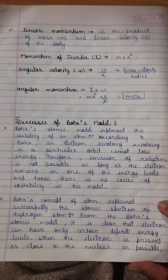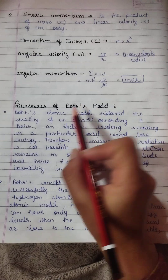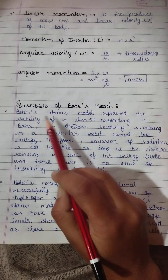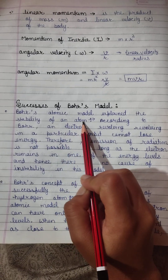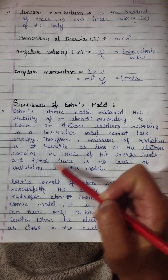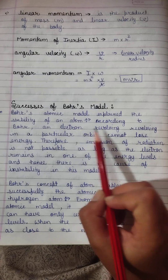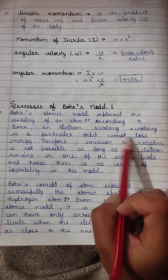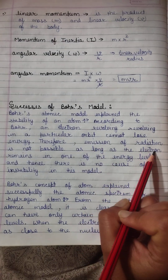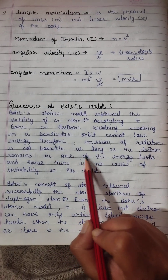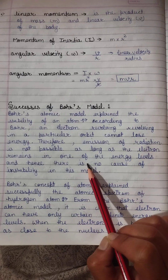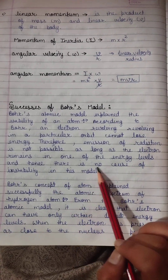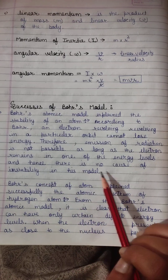Today we will study the successes of Bohr's model. First, Bohr's atomic model explained the stability of an atom — the most important point. According to the model, an electron revolving in a particular orbit cannot lose energy; therefore, emission of radiation is not possible as long as the electron remains in one of the energy levels, and hence there is no cause of instability in this model.